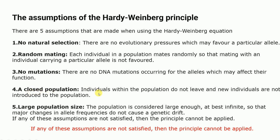Point number four is a closed population — individuals within the population do not leave and new individuals are not introduced. Point number five is that the population size should be large, considered at best infinite, so that major changes in allele frequency do not cause genetic drift. If any of these assumptions are not satisfied, the principle cannot be applied. Remember these five points for competitive examinations: no natural selection, random mating, no mutations, closed population, and large population size.